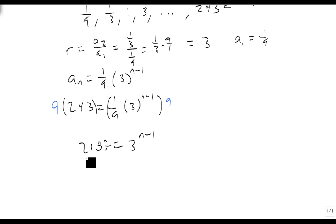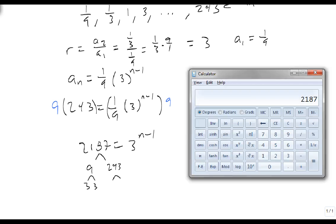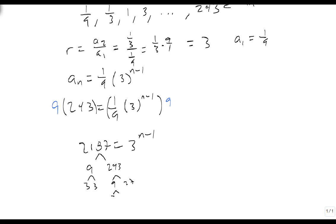2187 is a power of 3, and so we can break this down. We already know it's 9 and 243, and this is 3 and 3. 243 divided by 9 again is 27, which is 3 and 3, which is 9 and 3, which is 3 and 3.